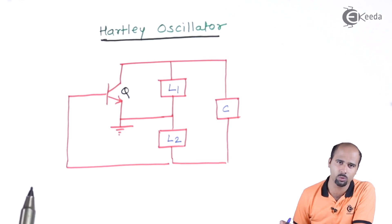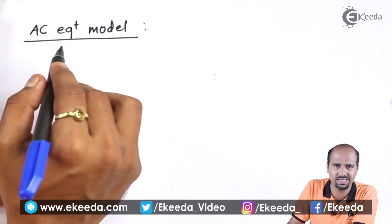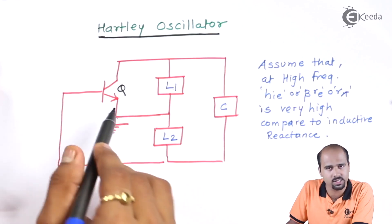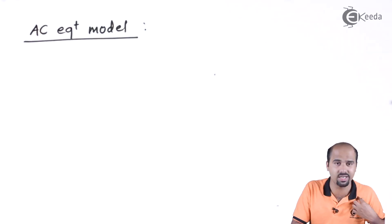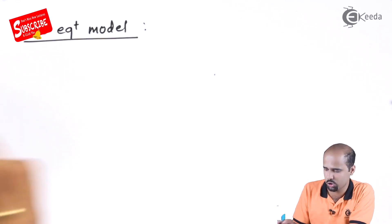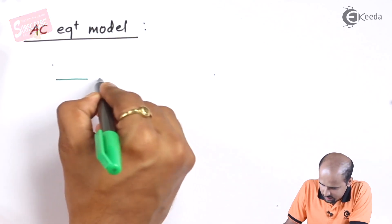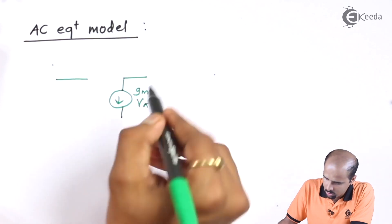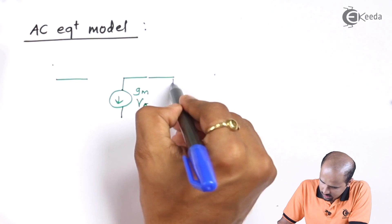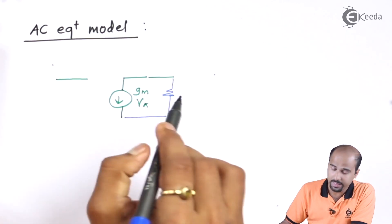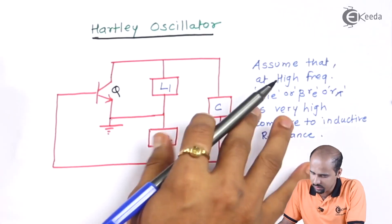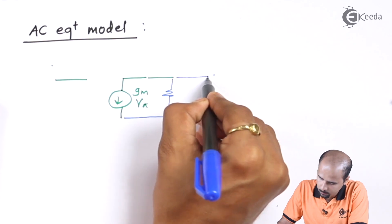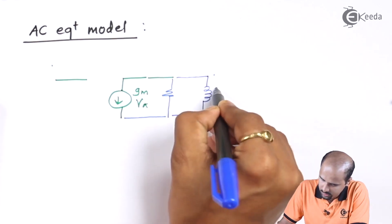We will start with the AC equivalent model. In the AC equivalent model, we assume that the Hartley oscillator is not carrying the input resistance HIE at high frequency. So at high frequency I am not considering HIE — I will keep this as open circuit. With that assumption, the AC equivalent circuit will look like Gm into V5. Then there is one resistor acting as load resistance, and inductor L1 is in between collector and emitter.